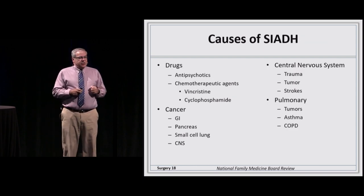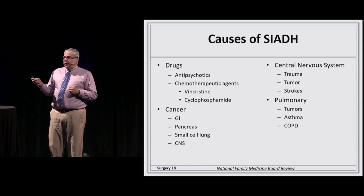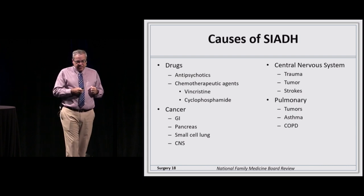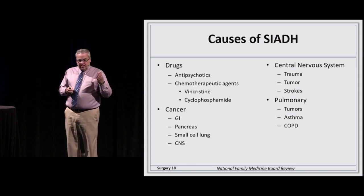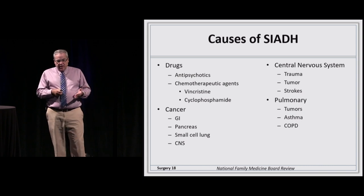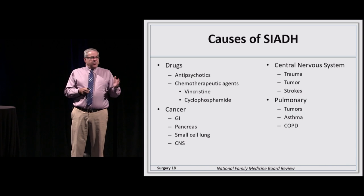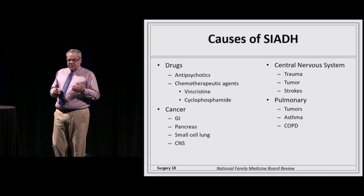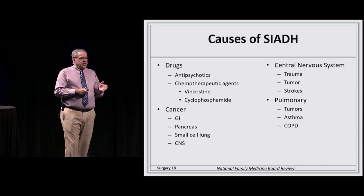Causes of SIADH include drugs — especially chemotherapeutic agents, and antipsychotics — and malignancies of the lung, pancreas, GI tract, and central nervous system. It can also be associated with pulmonary conditions like asthma and COPD, and following CNS trauma or strokes.